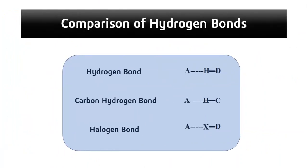Comparing different bond types: in a conventional hydrogen bond, the donor is covalently bound with hydrogen and both donor and acceptor are most electronegative atoms. In a carbon-hydrogen bond, hydrogen is covalently bound with carbon. In a halogen bond, the donor is bound with the halogen atom, which then makes an interaction with the acceptor.